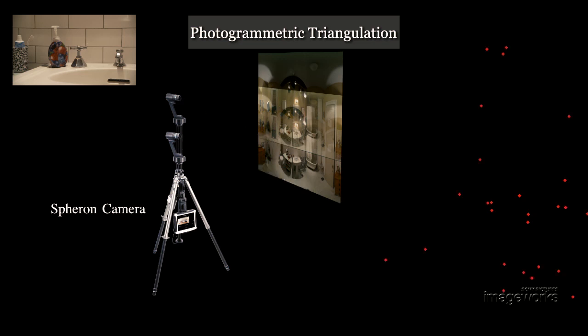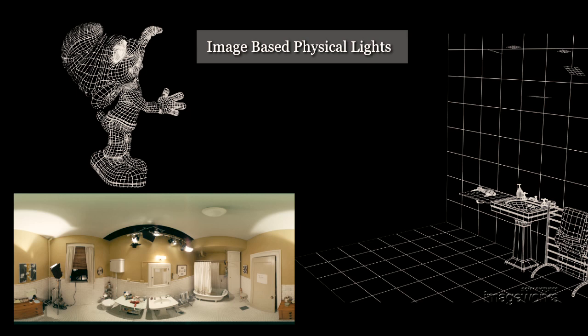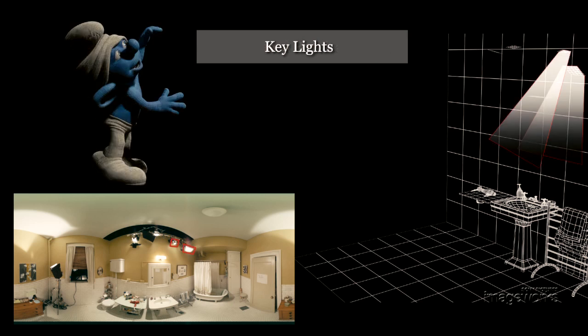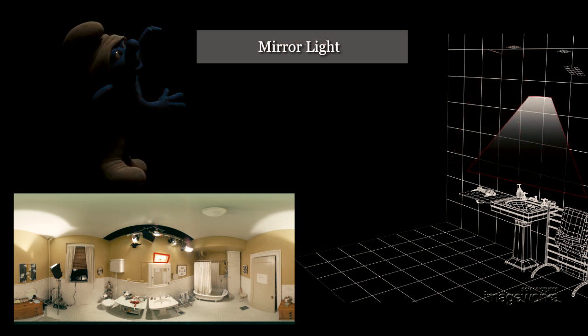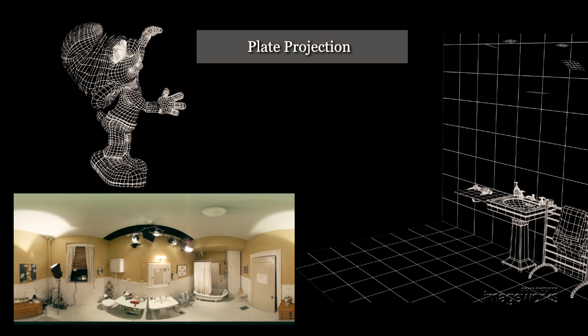Through triangulation we can calculate the distance away from the camera each of those points are and build a geometric representation of the set. We can project the images onto that geometry to rebuild a realistic looking physical model of the scene.